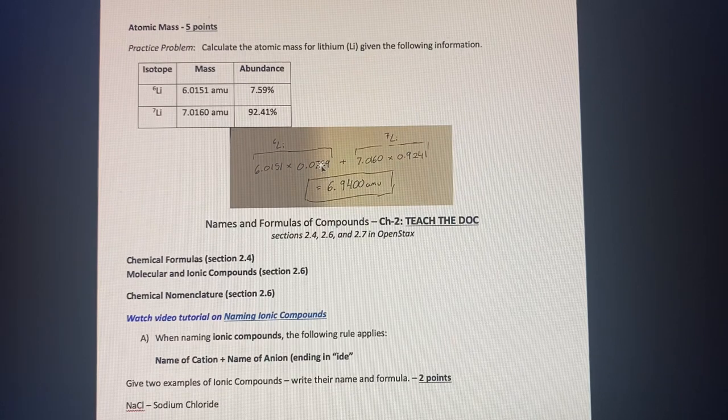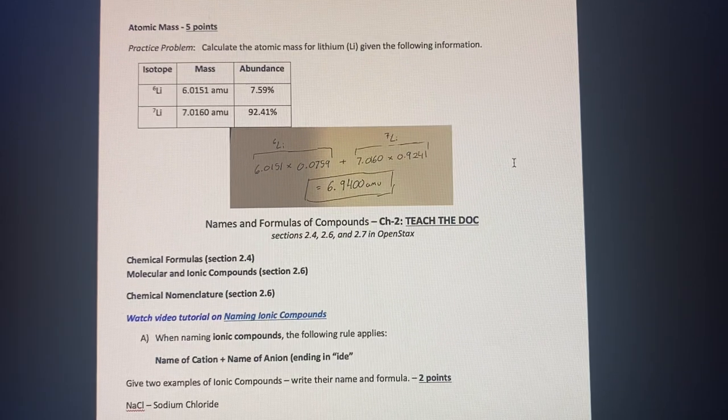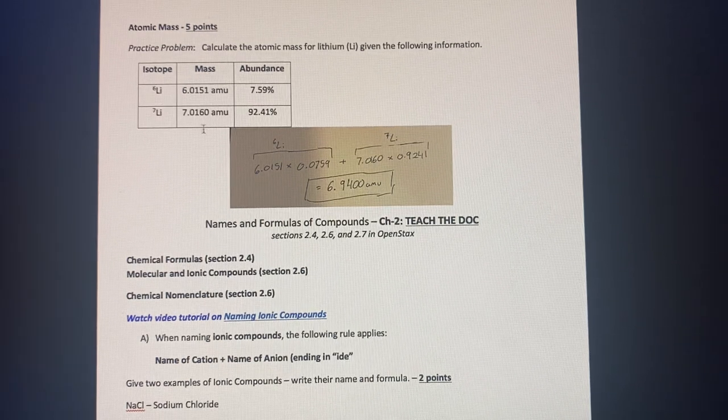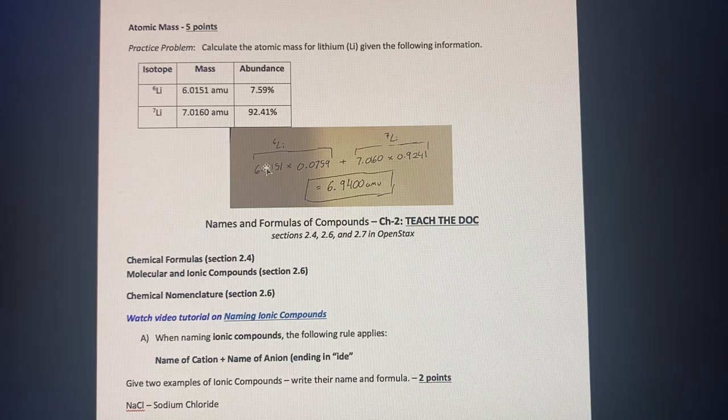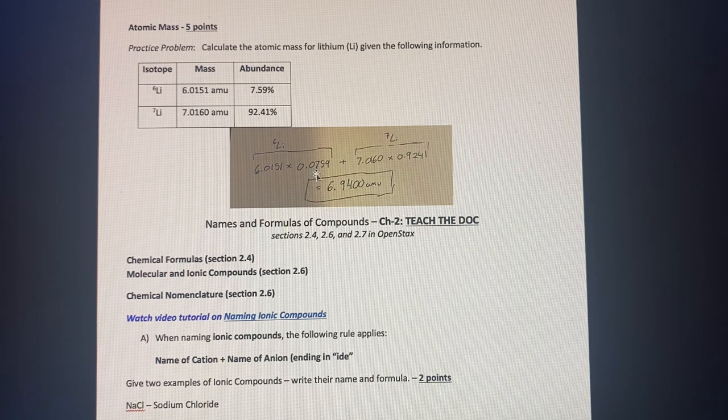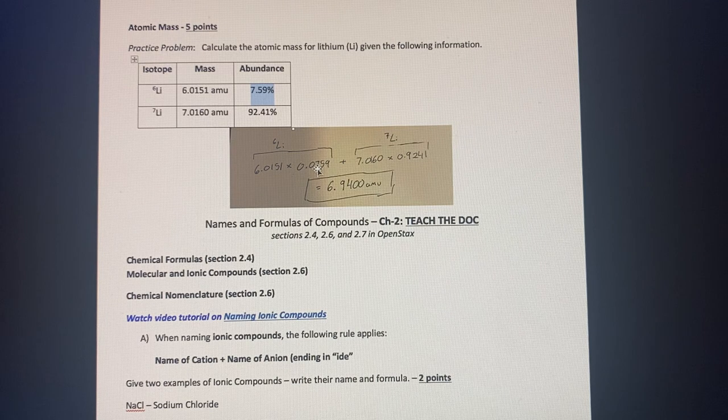Now to calculate the atomic mass, we go ahead and look at the overall percentages, and we combine them. So here I have the isotope of six lithium. And we take the mass of that six lithium, and we multiply it times the abundance of it, not in the percentage form. So to take it out of the percentage form, you divide it by 100.